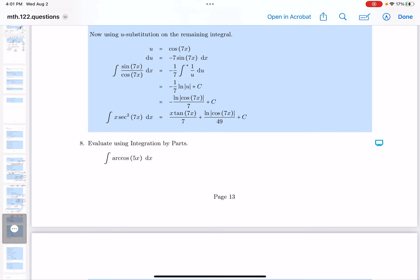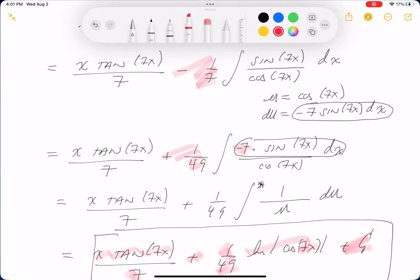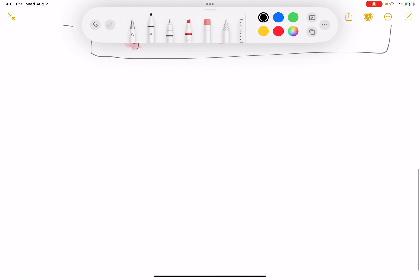Alright, we're at number eight now, and I'm going to go to the whiteboard again. I need room, that's why. And what is it going to be? This number eight, it's going to be arc cosine of 5x dx.